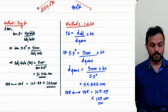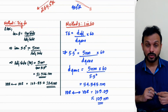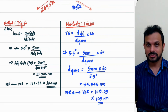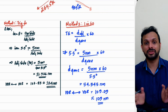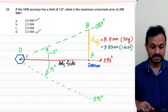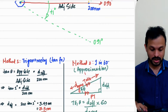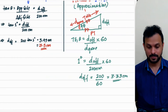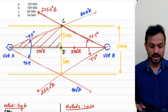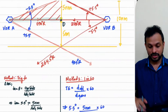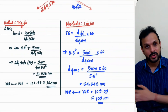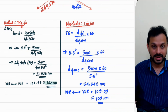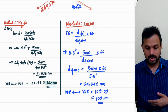Looking at both answers: 1-in-60 gives 109 nautical miles and trigonometry gives 104 nautical miles — an obvious difference of 5 nautical miles. This is because we have a larger track error of 5.5 degrees compared to the previous question where it was just 1 degree, which is why the answers from trigonometry and 1-in-60 were very close then (3.5 vs 3.3). With a larger track angle, the 1-in-60 answer drifts further from the exact trigonometric answer. So 104 is the exact answer.